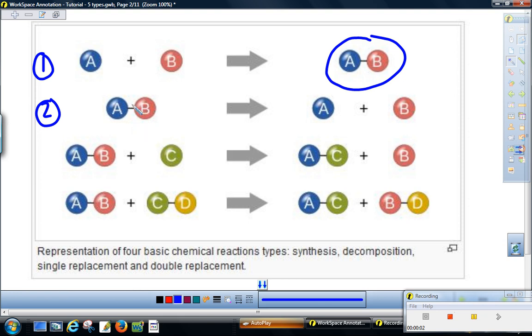Reaction two, decomposition, is the opposite process. We're starting out typically with one compound, and usually through electrolysis or heat, the bond is going to break and these two substances will separate. It could be a compound separating into two elements, or a compound and an element, or two compounds.